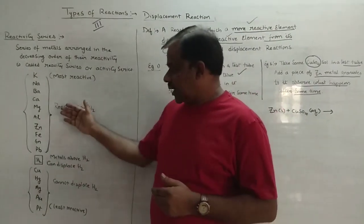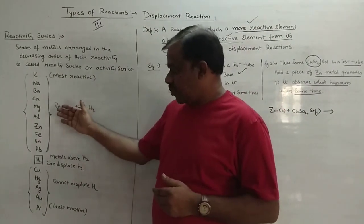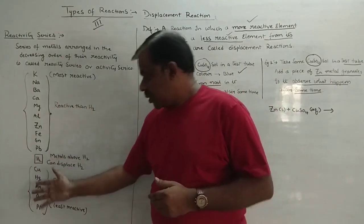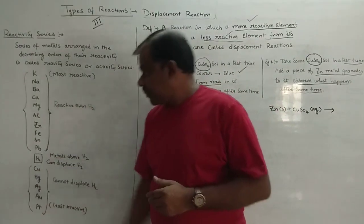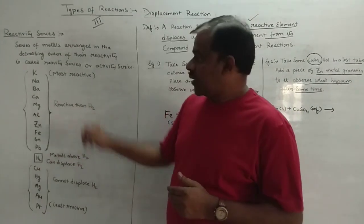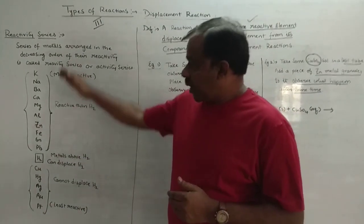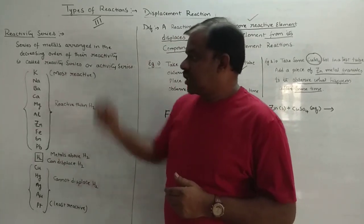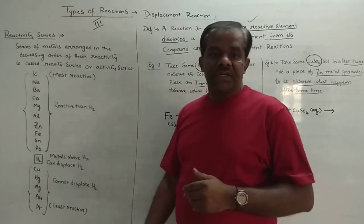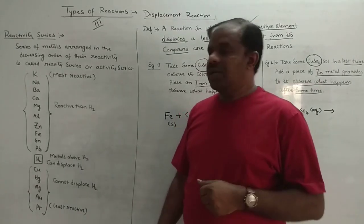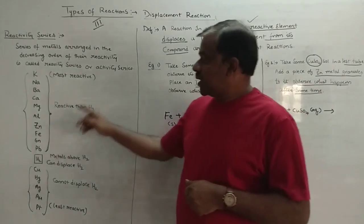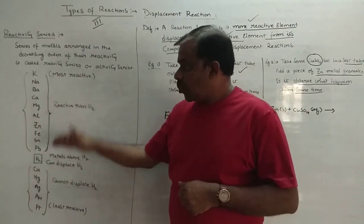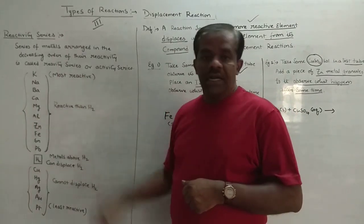In the reactivity series, there are three parts: Part 1, Part 2, and Part 3. In Part 1, we have metals which are above hydrogen in the reactivity series. This means that all these metals are more reactive than hydrogen.